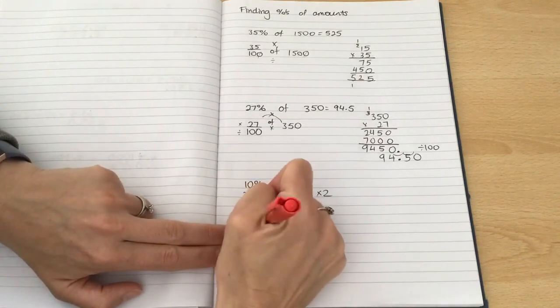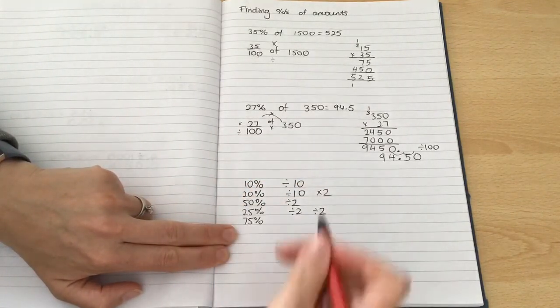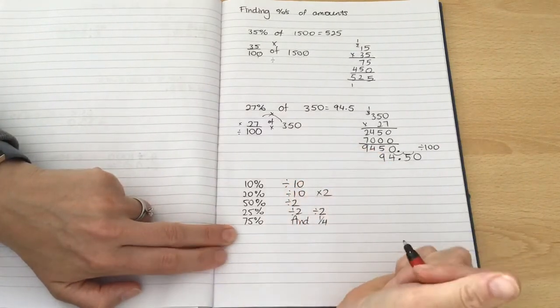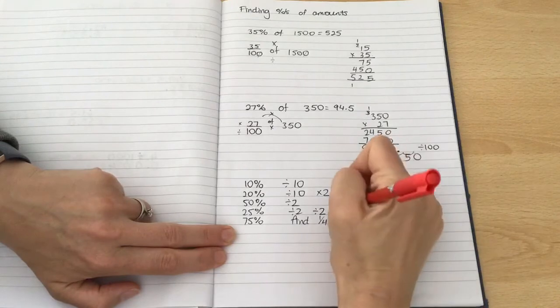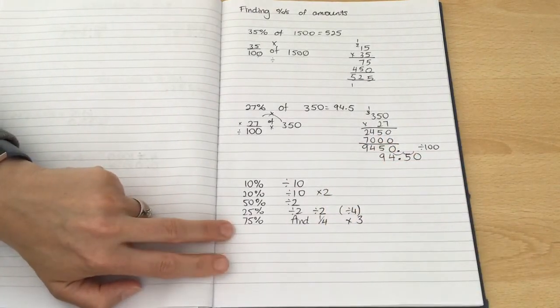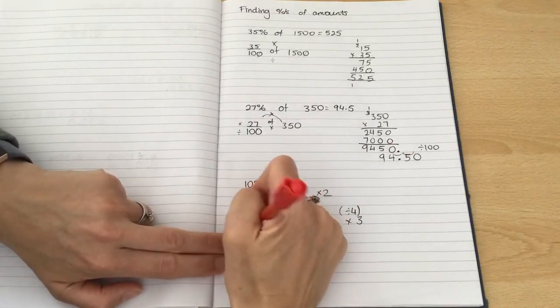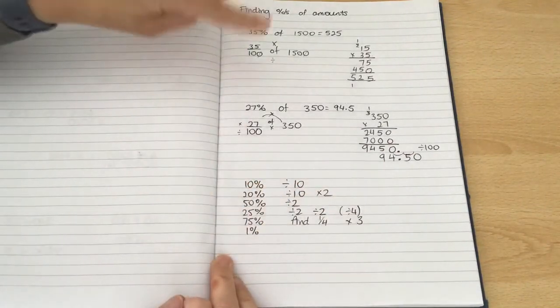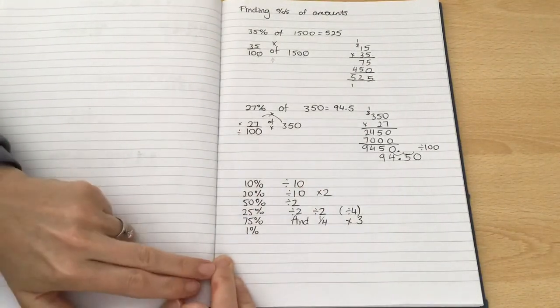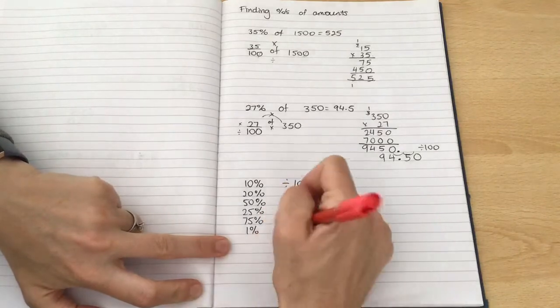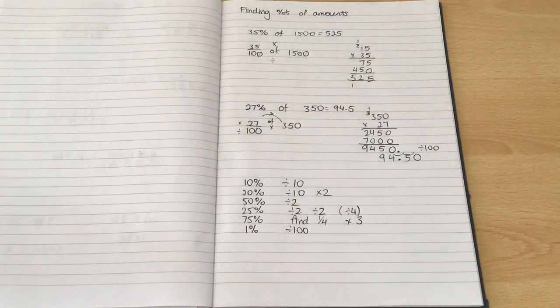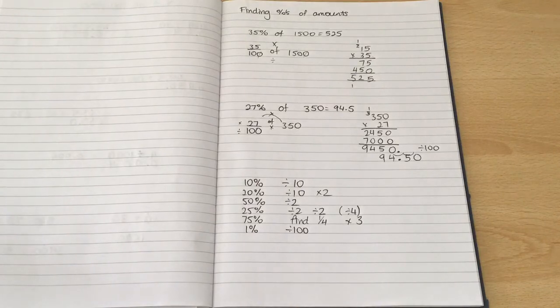And once you know what one quarter is, 75% is three quarters. So you can find one quarter by halving and halving again or dividing by four, and then timesing that by three because you have three of them. To find 1%, which is essentially what we are doing up here when we're dividing by 100, we're finding 1% and we're timesing it by the number, the percentage that we need. Simply divide by 100. So that is how we're going to find our percentage amounts.